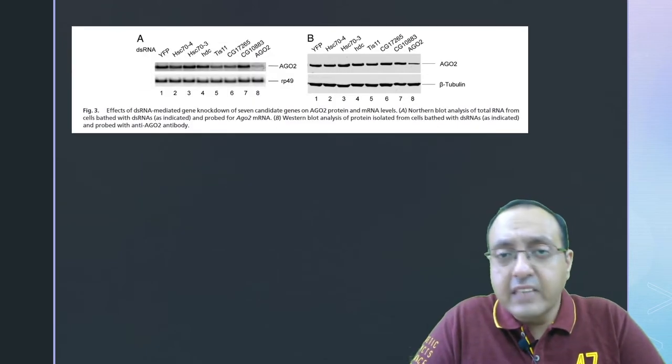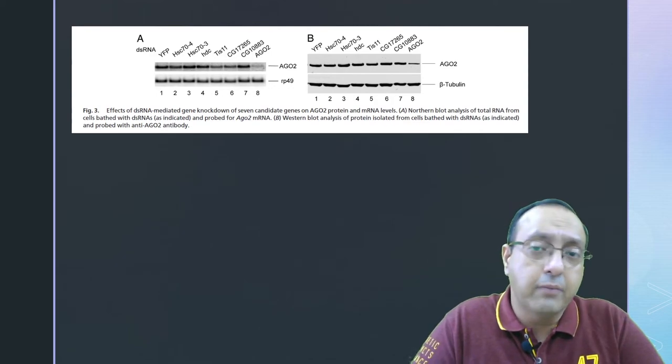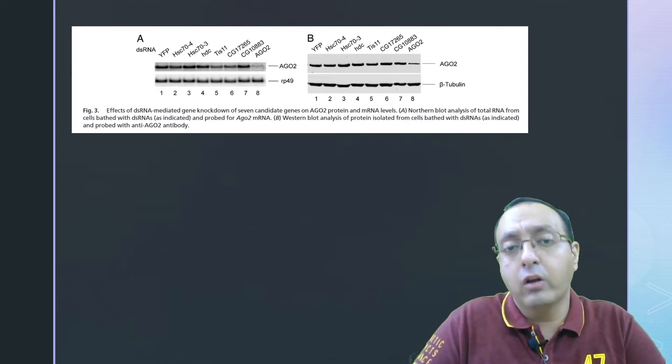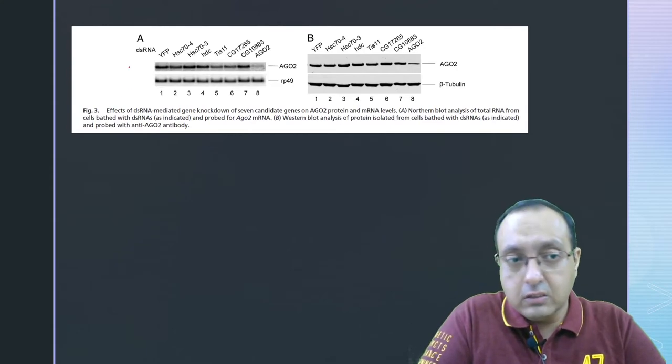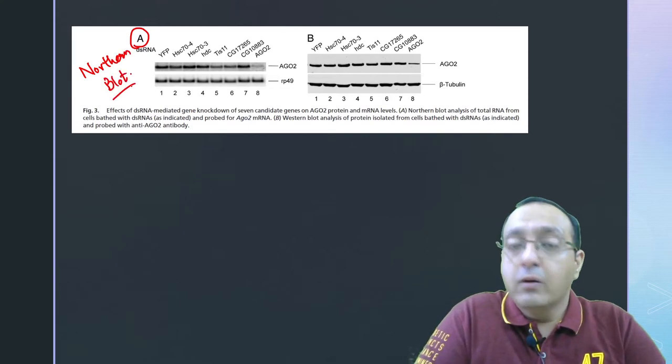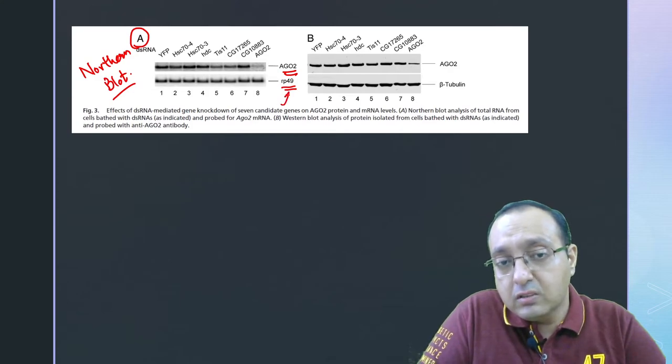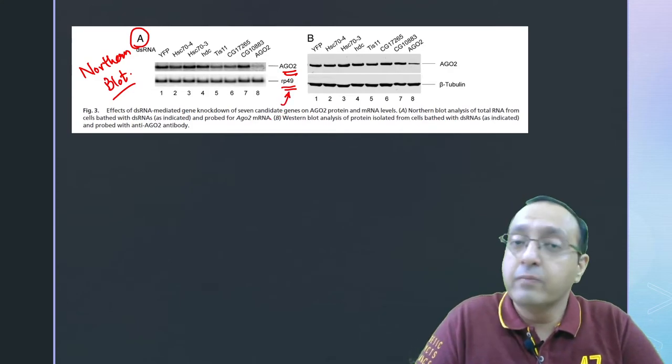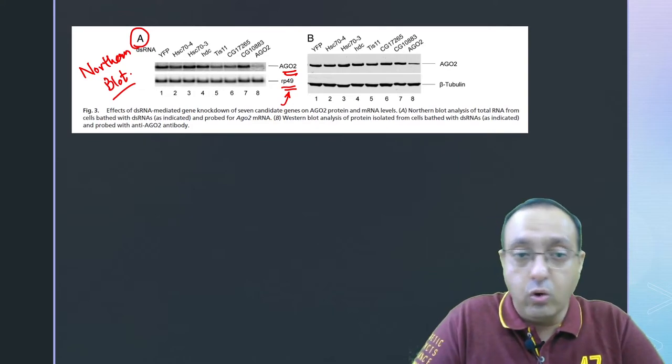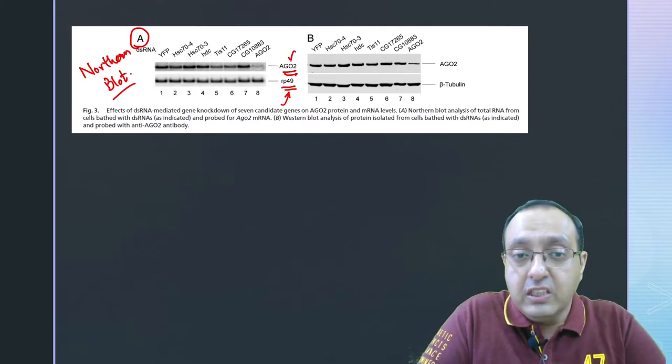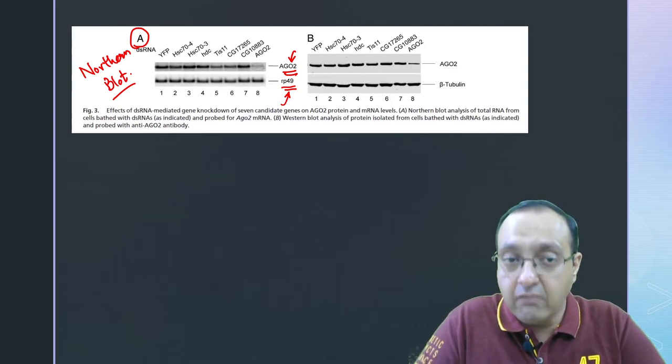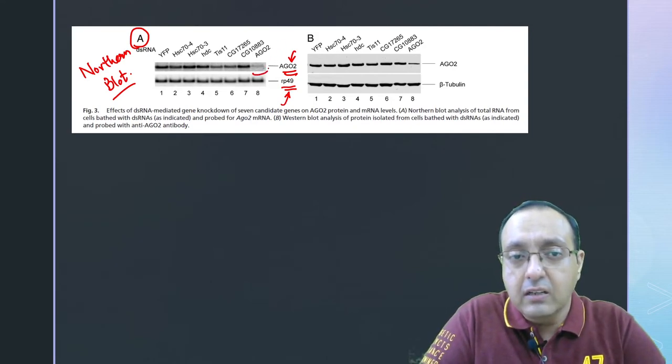Here is a good example of a study where they looked at double-stranded RNA mediated gene knockdown and its effect on RNA and protein levels. In the panel A, we have the Northern blot where they are looking at the RNA levels. We have two genes here, RP49, which is a ribosomal protein housekeeping gene, its levels should not change, it is a control. AgO2 is the gene that they are knocking down, so its levels should be reduced and that's what they see, its levels are highly reduced.